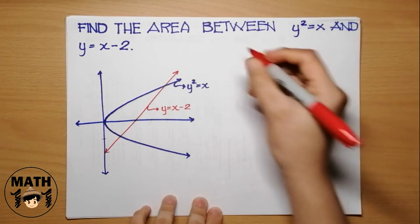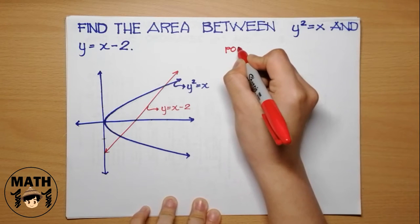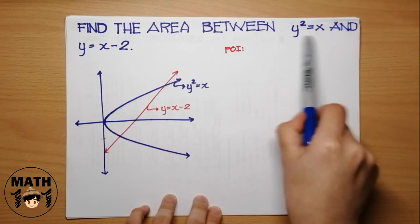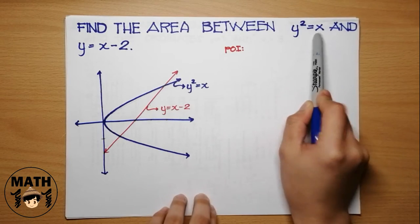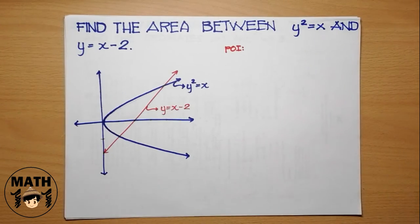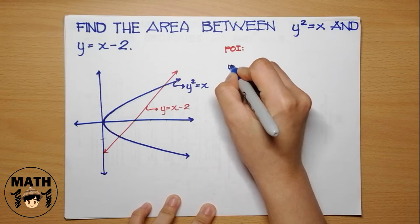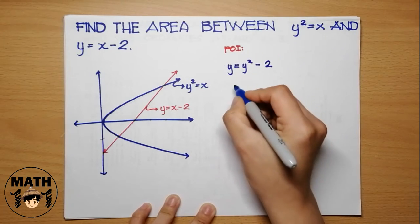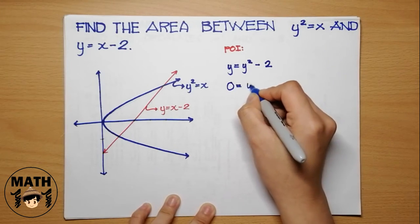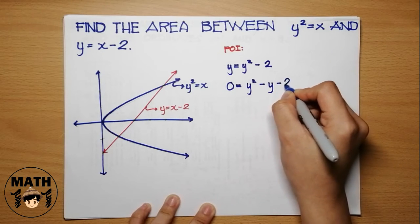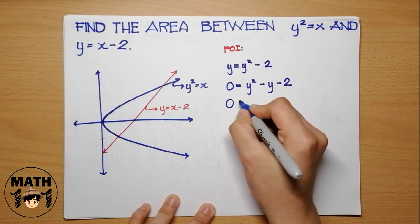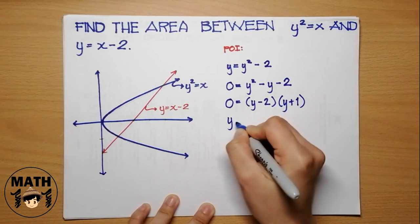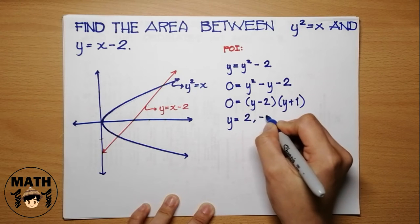Let's abbreviate that as POI. So, paano ba natin isasolve yung point of intersection? Considering these two equations, ipalit na lang natin as a value of x — y squared's equation na ito. Then, we'll have y equals y squared minus 2. Tipad natin sa kabilang side: 0 equals y squared minus y minus 2. Then factoring this out: y minus 2 multiplied by y plus 1. So, we have the values y equals 2 and y equals negative 1.